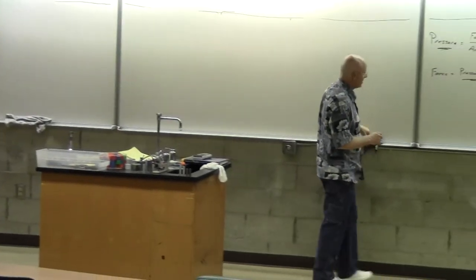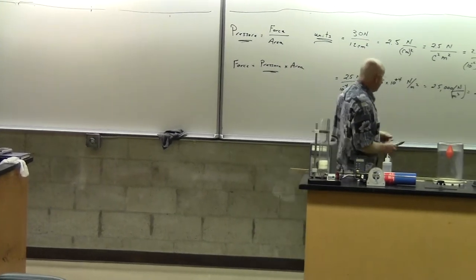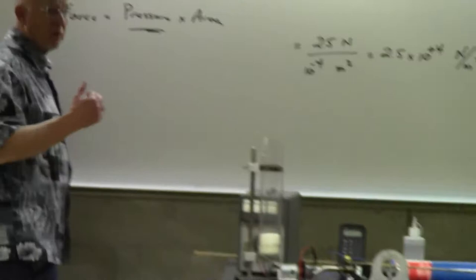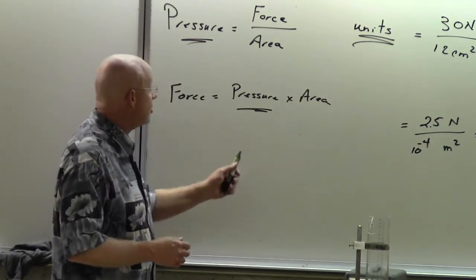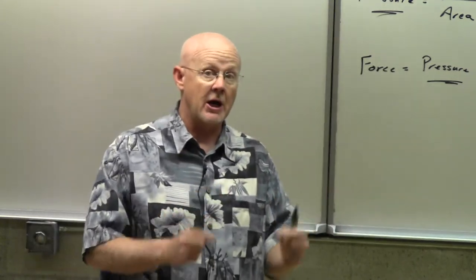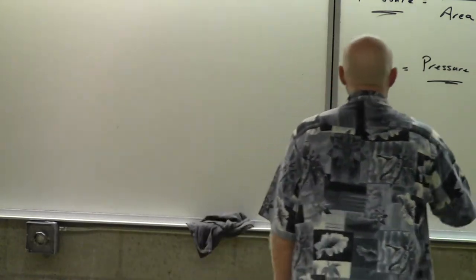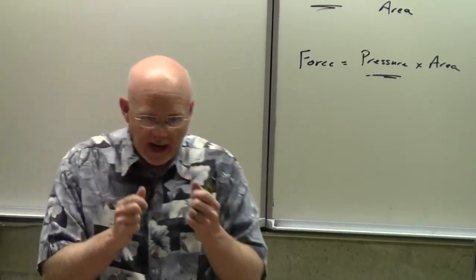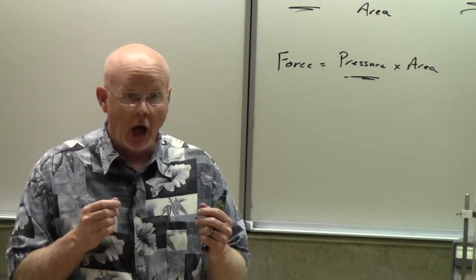We are going to use Pascals. It also turns out that a Pascal is not a very big pressure, so a lot of our gauges use kilopascals — the prefix 'kilo' to make a thousand Pascals. For example, the car tires on my car are rated to inflate to 35 PSI — 35 pounds per square inch. But when I get on my road bike, those little narrow tires say fill it up to 100 PSI.